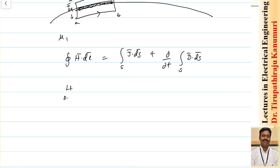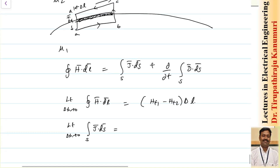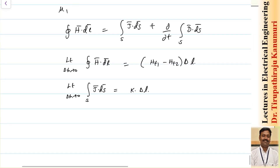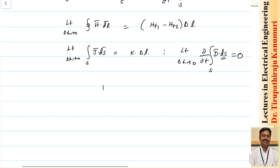As delta h tends to 0, the closed integral of H dot dl becomes Ht1 minus Ht2 multiplied by delta l, keeping only the top and bottom components. On the right hand side, the surface integral of J dot ds, representing the surface current density K, becomes K multiplied by delta l. The time-derivative term of D dot ds vanishes as the surface area goes to 0. So Ht1 minus Ht2 equals K.